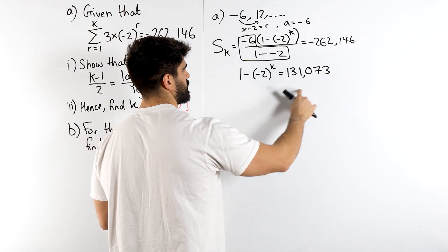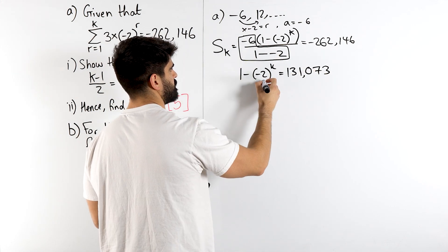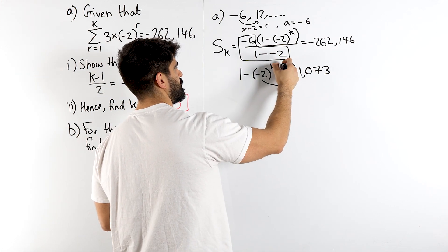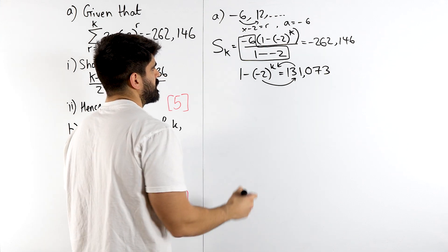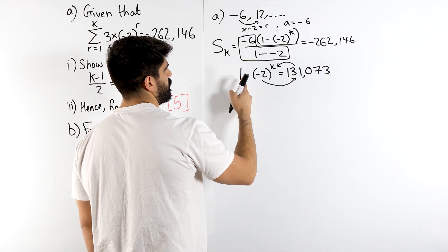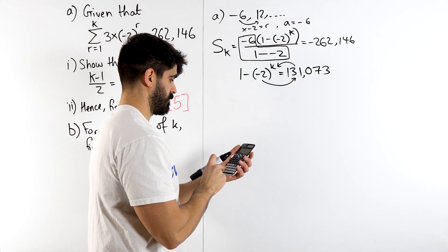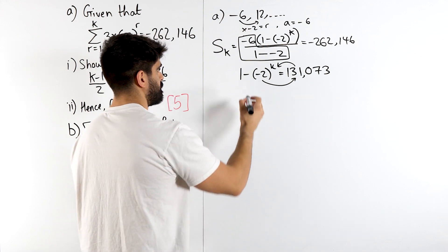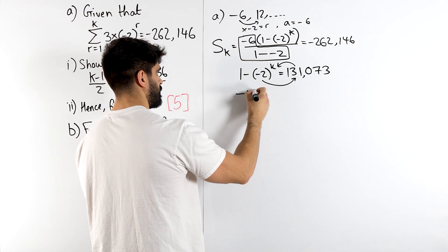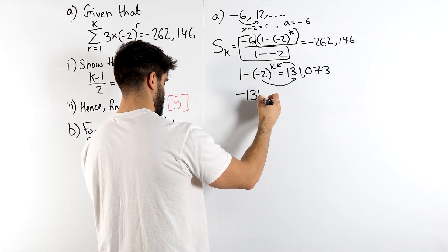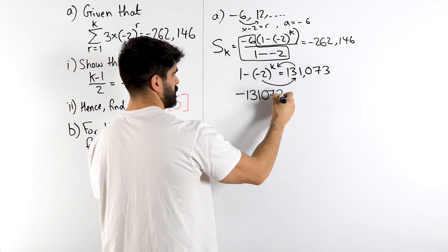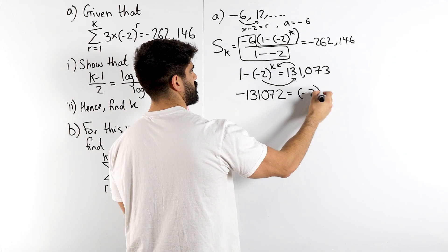Switch things around, we can bring that here and bring this here. So we're going to have 1 minus this, 1 minus the answer, so that's minus 131,072 is minus 2 to the power of k.